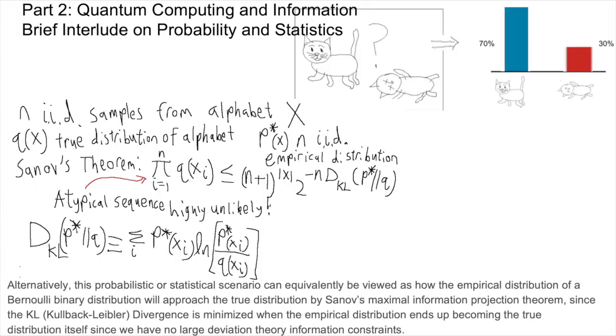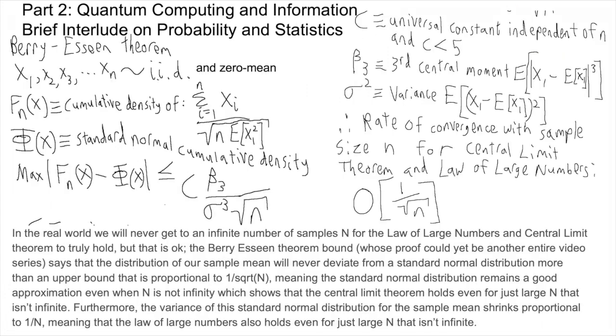Alternatively, this probabilistic or statistical scenario can equivalently be viewed as how the empirical distribution of a Bernoulli binary distribution will approach the true distribution by Sanov's maximal information projection theorem, since the Kullback-Leibler divergence is minimized when the empirical distribution ends up being the true distribution itself, since we have no large deviation theory information constraints. In the real world we will never get to an infinite number of samples n for the law of large numbers and central limit theorem to truly hold, but that is okay.